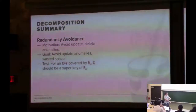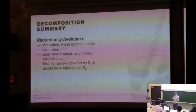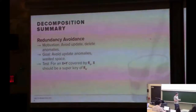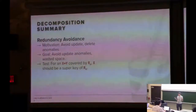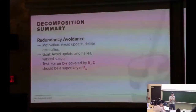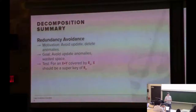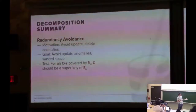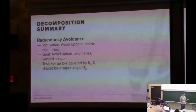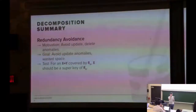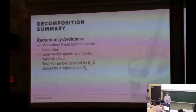The last property is redundancy avoidance: you don't want repeated attribute values in a single relation, because it wastes space and creates update anomalies — if a particular entity is replicated across multiple tuples, you have to update all of them when something changes. The test is: for a given functional dependency X implies Y, if it's covered by a sub-relation Rn, then X just has to be a superkey of Rn, meaning for a given value of X you get a unique value of Y.